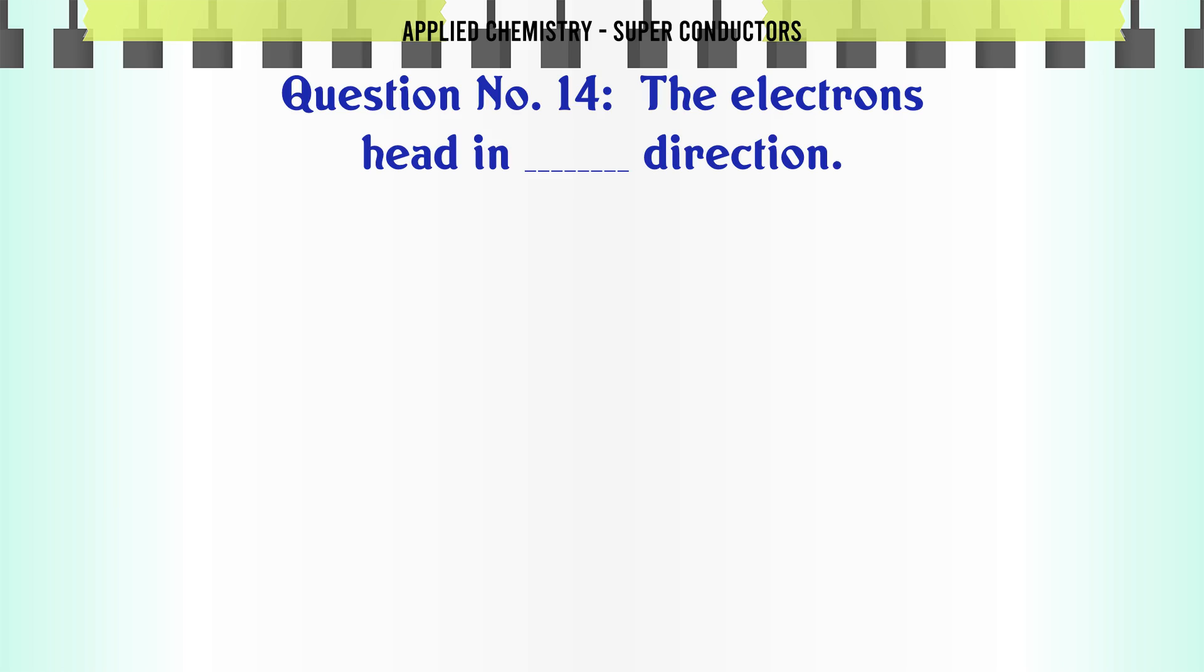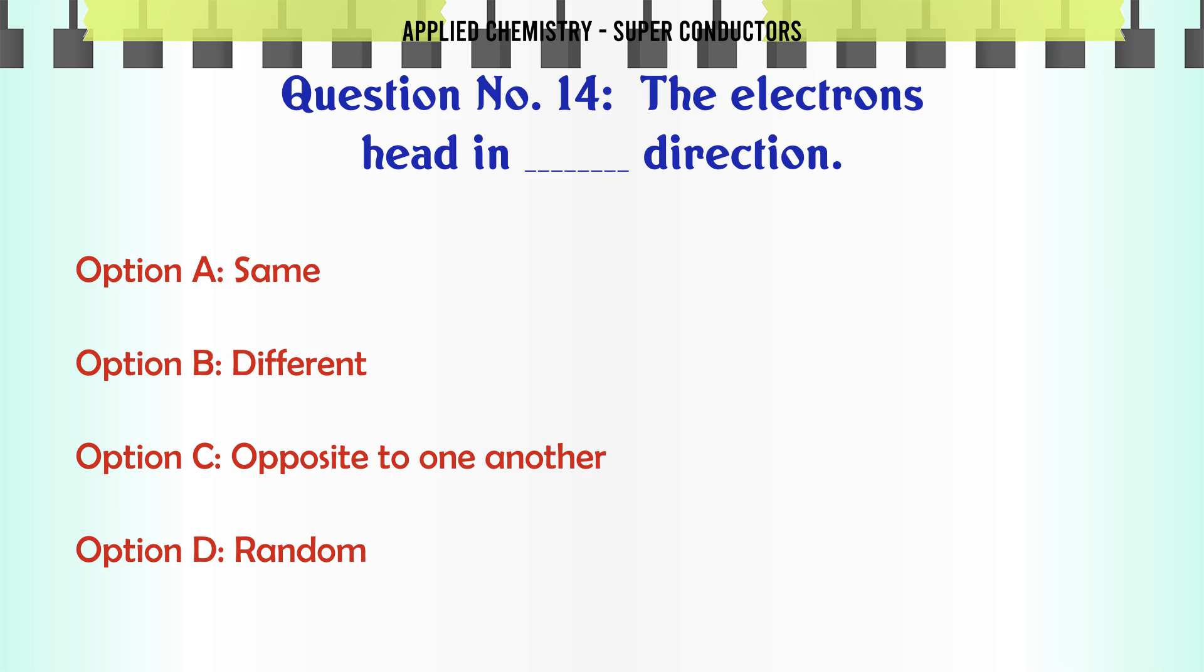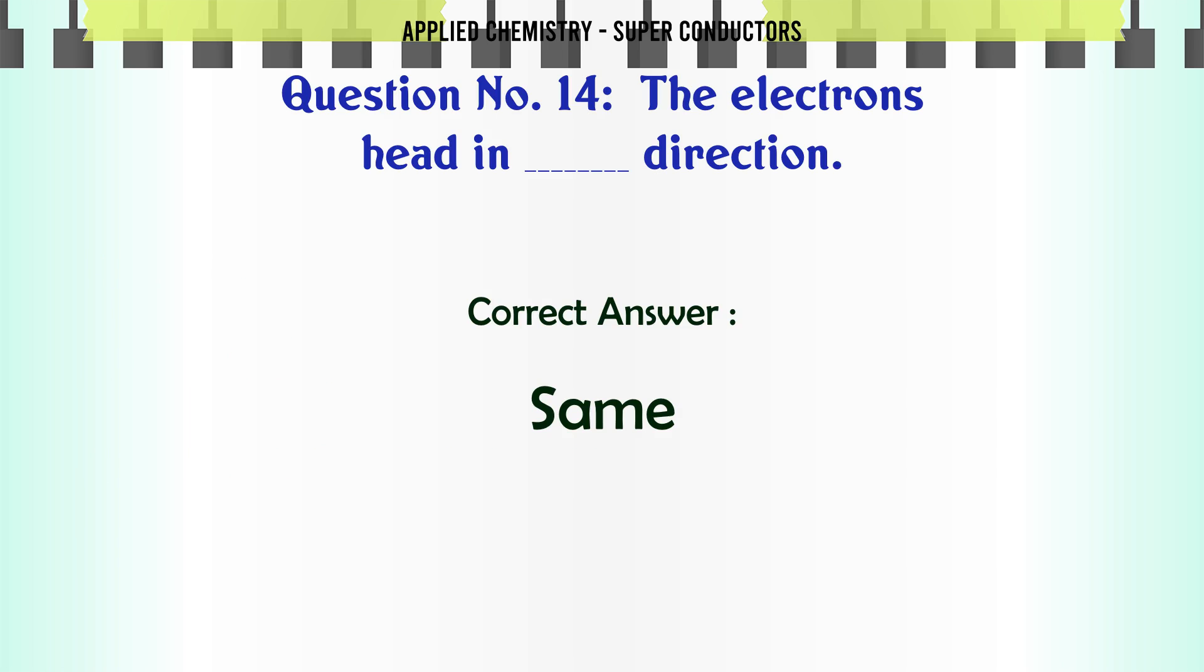Electrons head in direction: A same, B different, C opposite to one another, D random. The correct answer is same.